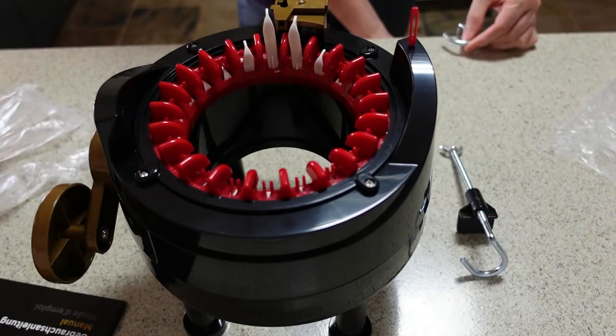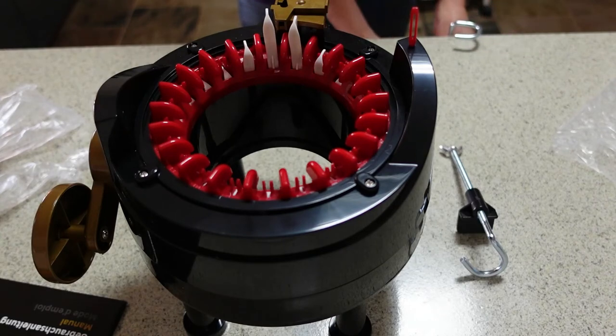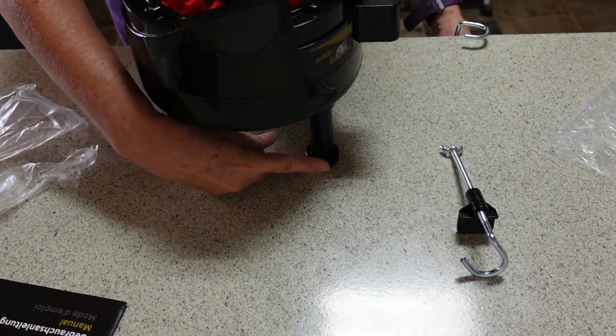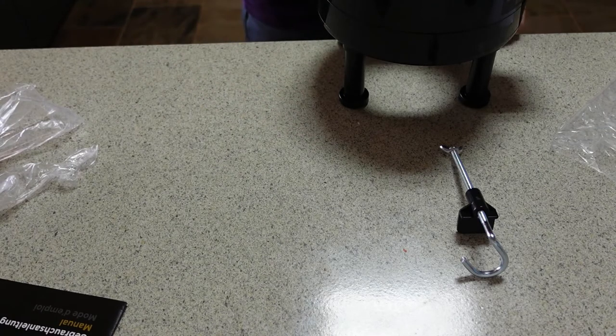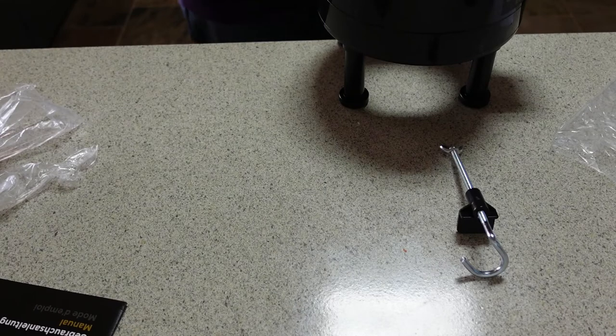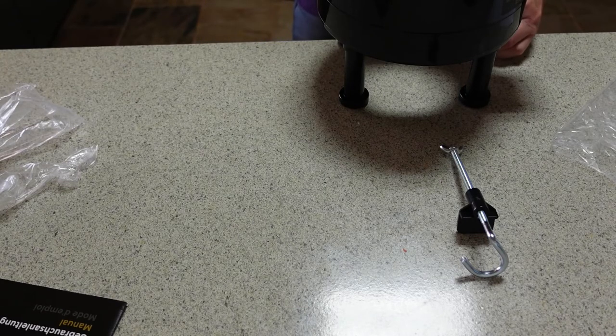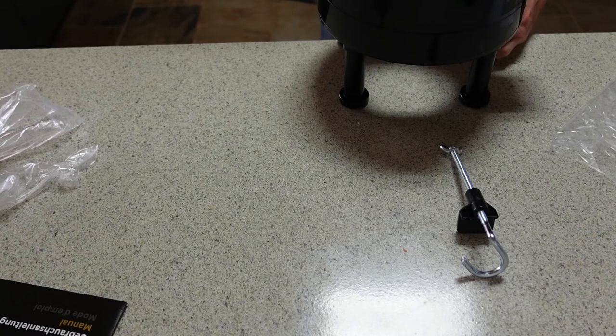This part of the clamp goes around the foot on the knitting machine. Let me see if I can make that fit. Not quite. I can undo this just a tiny little bit, and now it fits. Okay, so I'm just going to do up that clamp.